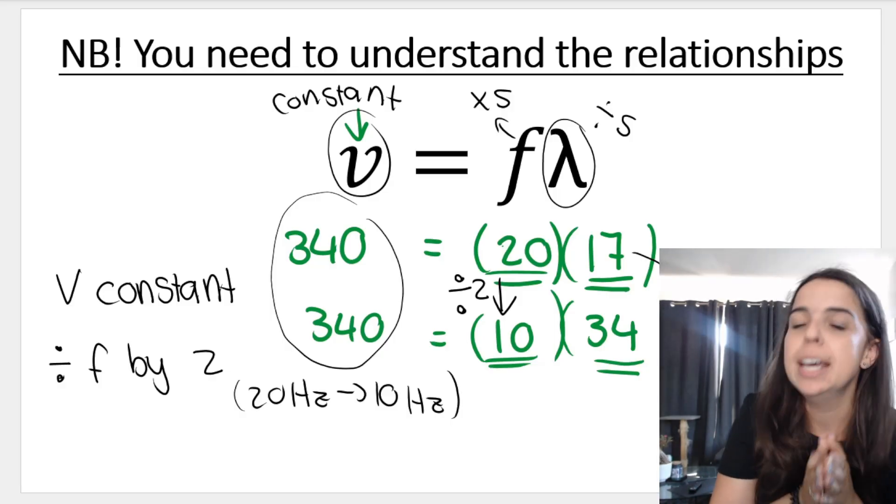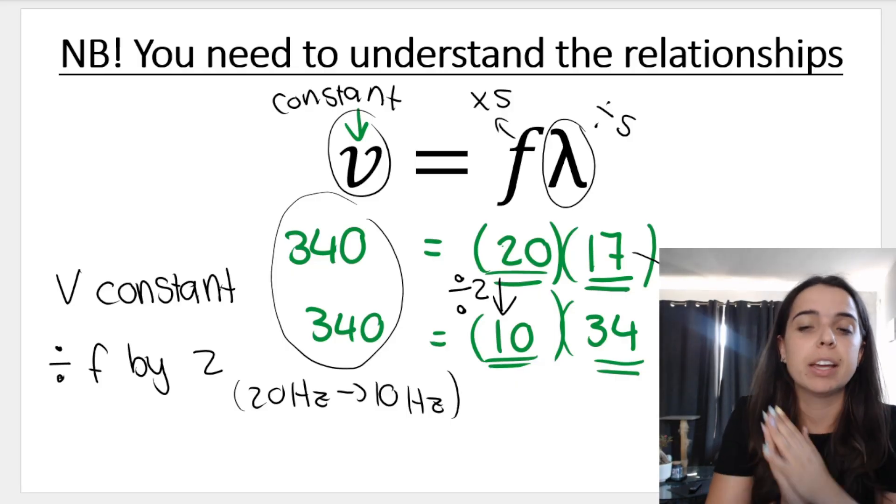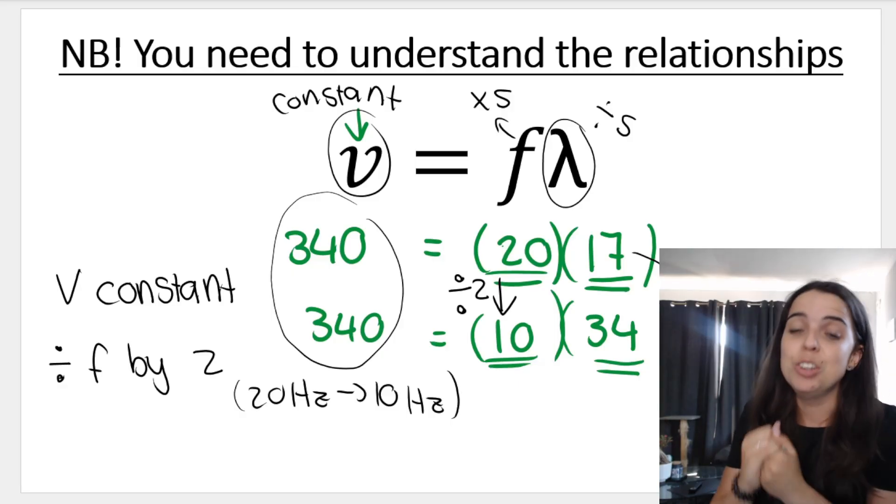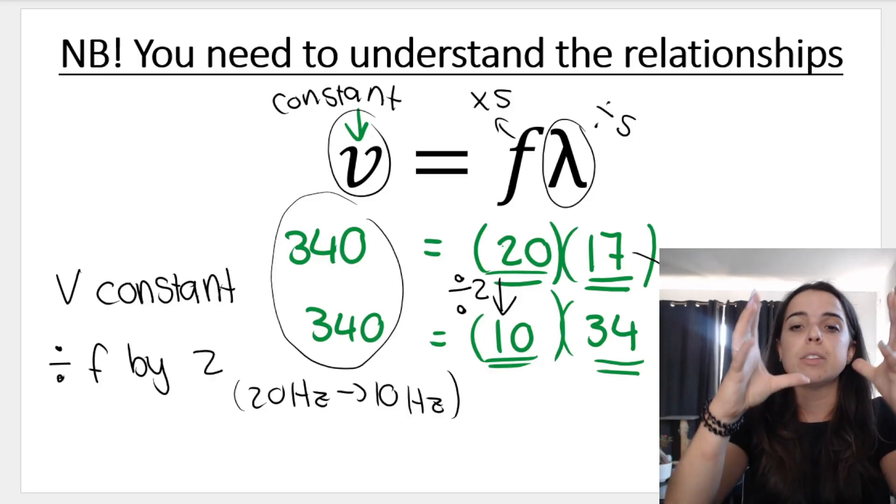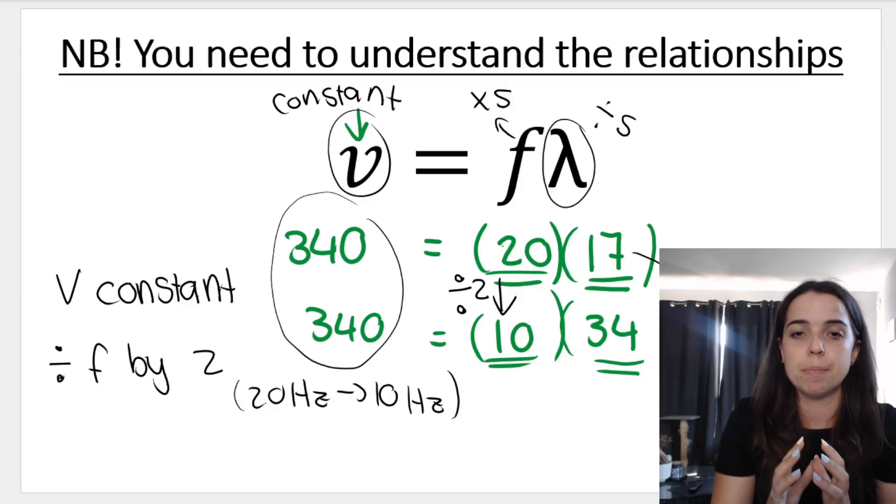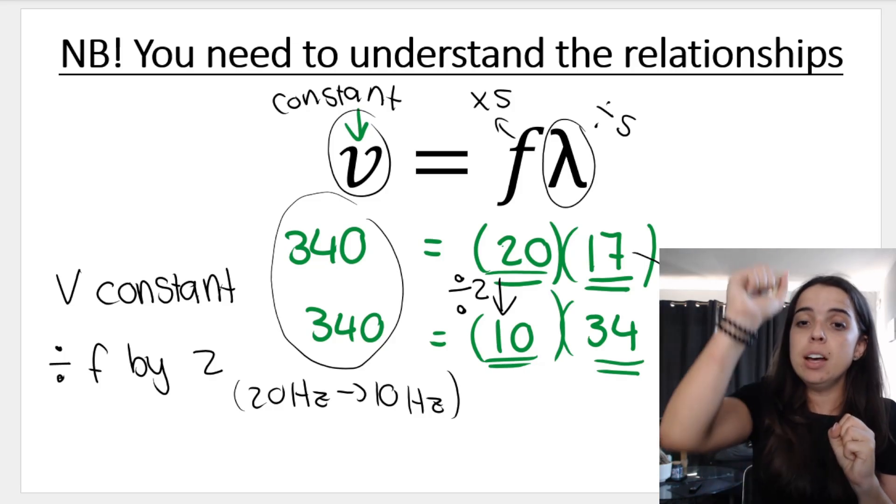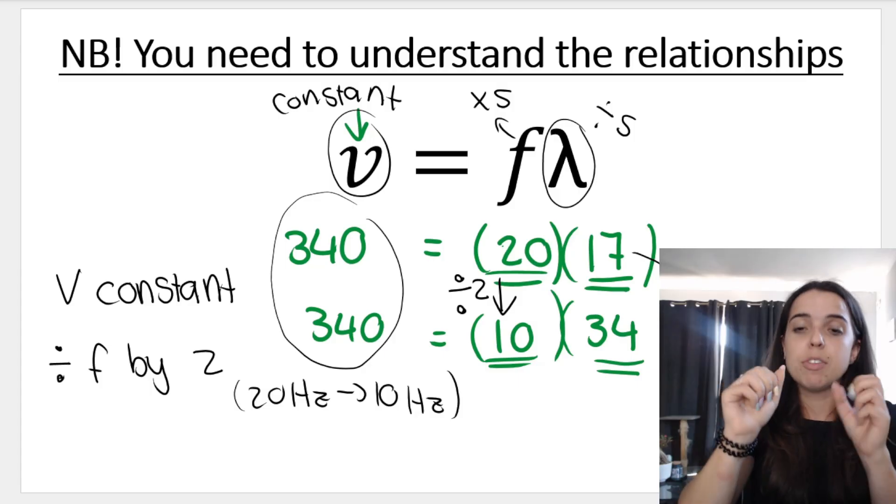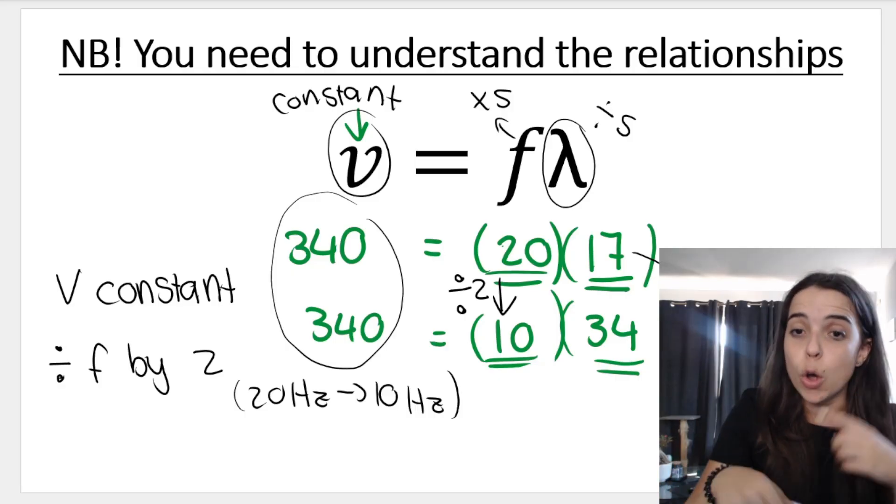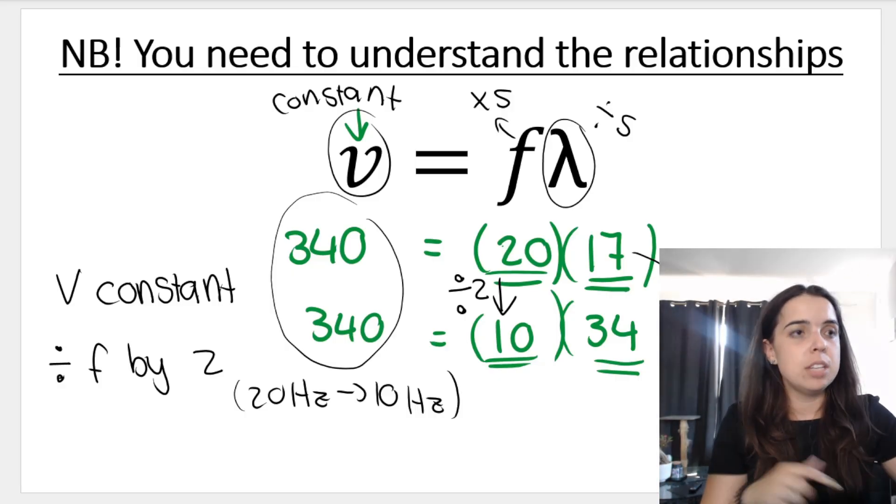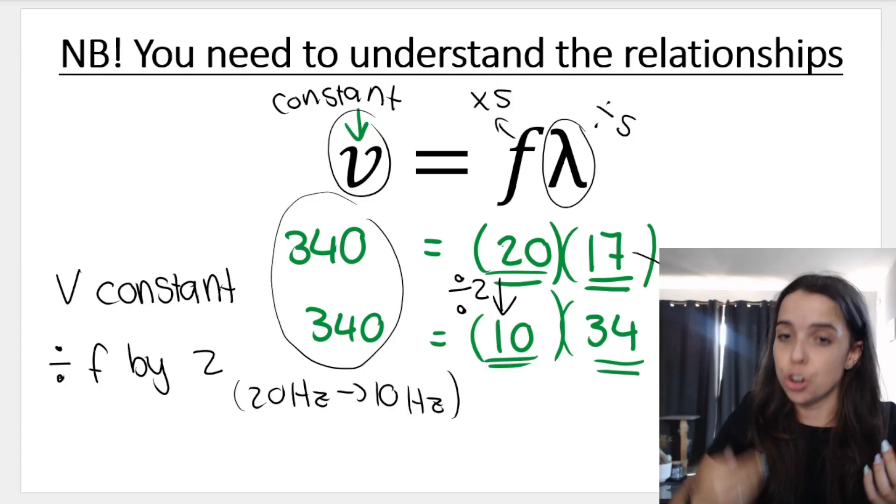It's very good to know these relationships. They could ask it in past papers, in your upcoming exams. You need to know that if velocity, if the speed v, the speed of the wave stays the same, frequency and wavelength do the opposite. If I make frequency bigger, wavelength is going to go smaller. If I make wavelength bigger, frequency is going to go smaller. They do the opposite things. They are inversely proportional. If I double frequency, wavelength will halve. If I triple frequency, wavelength will be a third.